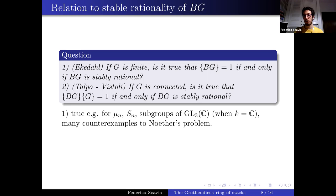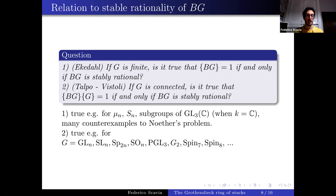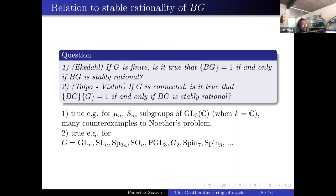There are many examples where this is known to be true: for μn, for the symmetric group, for subgroups of GL3, and for many counterexamples to other problems detected by the unramified Brauer group. For connected G, a long list of examples includes: special groups (GLn, SLn, Sp2n), special orthogonal groups, PGL3, G2, Spin7, Sp8, and others. The equivalence holds for all groups in this list.